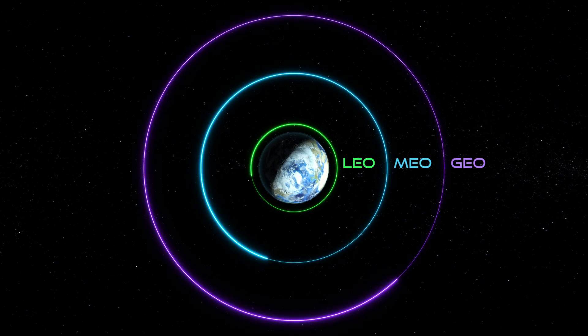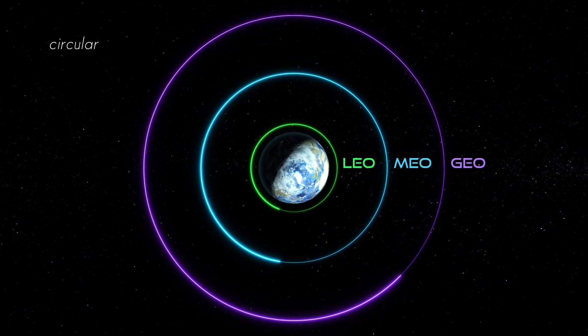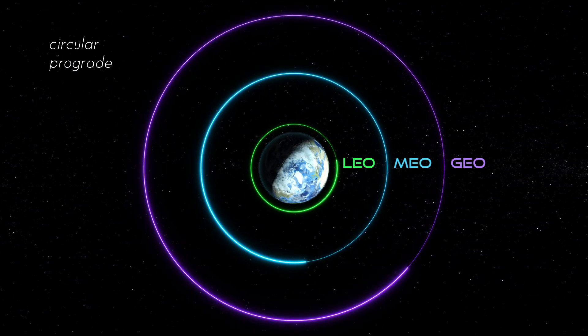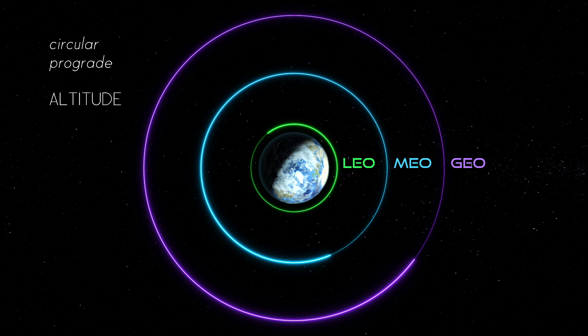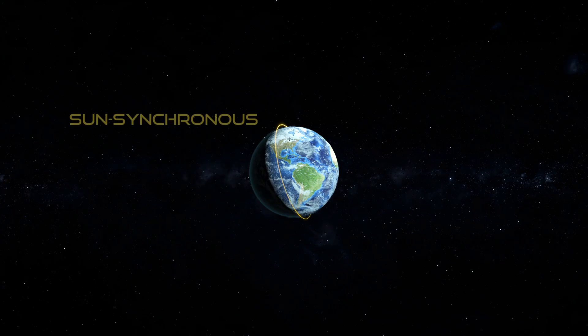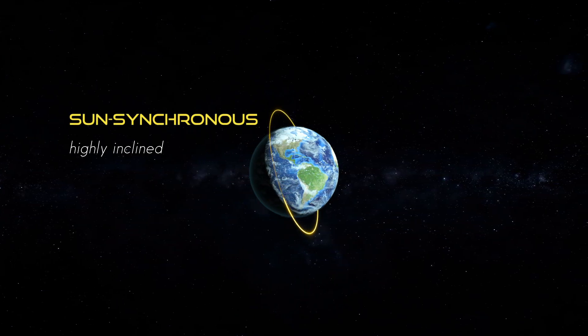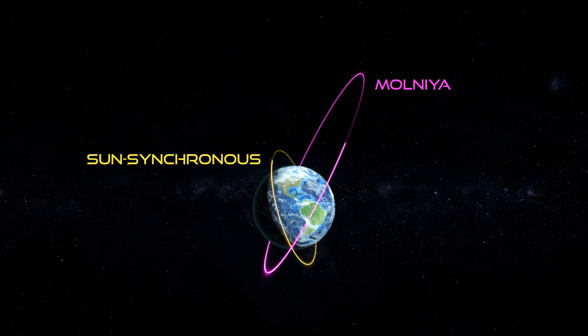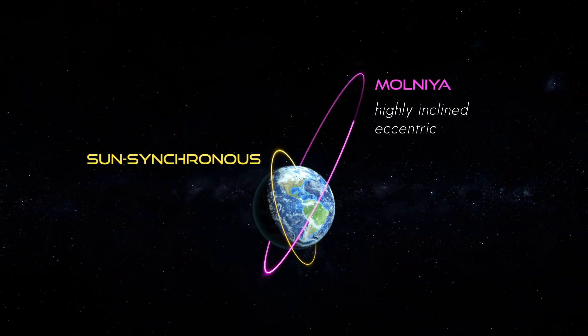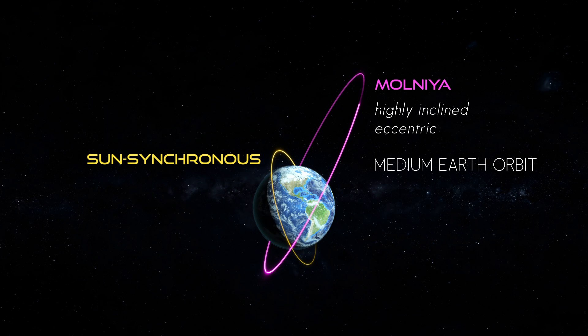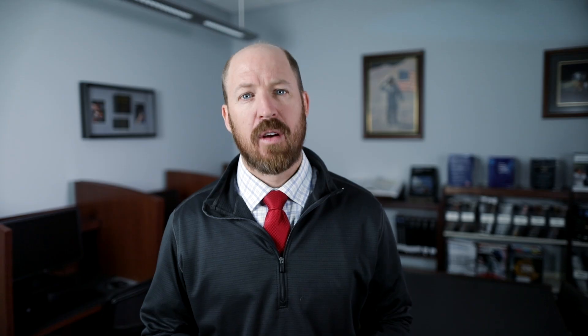LEO, MEO, and GEO are typically circular prograde orbits, but the defining characteristic for these three orbits is altitude. Sun-synchronous orbits are typically highly inclined and in low Earth orbit. Molniya orbits are highly inclined and eccentric, and typically in medium Earth orbit. For more information concerning inclination, eccentricity, or any other classical orbital element, please see the COE educational aid.